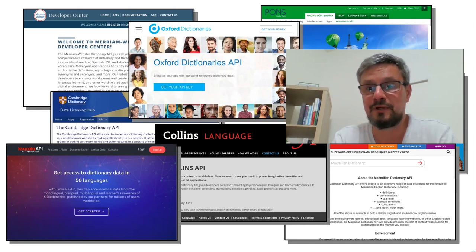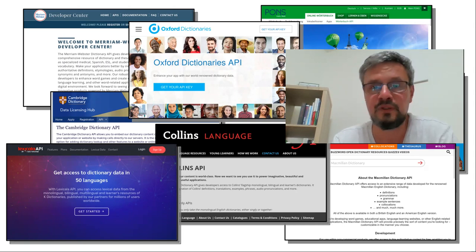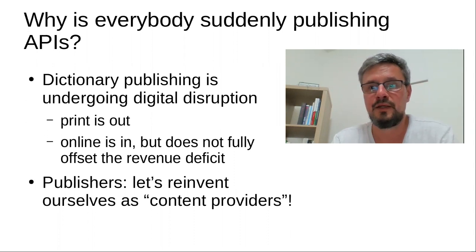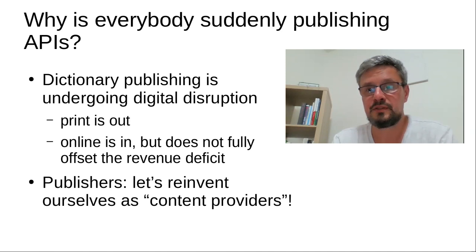So I thought, why not me — here's my attempt to summarize what I think is happening in lexicographic APIs right now. First, let's ask ourselves: why is everybody suddenly publishing APIs? It's obviously one of the ways in which the dictionary publishing industry is responding to the ongoing digital disruption that has been ravaging the industry for almost two decades. They're not selling so many printed dictionaries anymore; instead they're making dictionaries available on the internet, making some money from that, but not as much as they used to from paper. So they're looking for alternative ways to monetize their content.